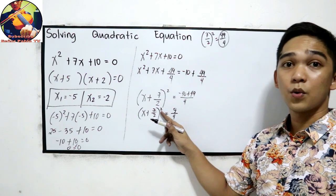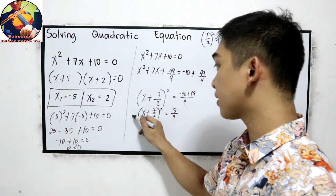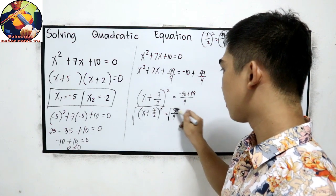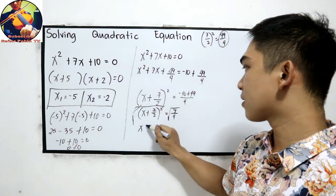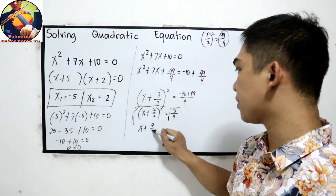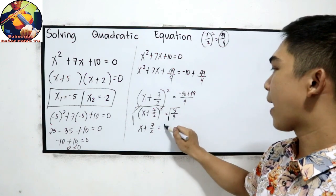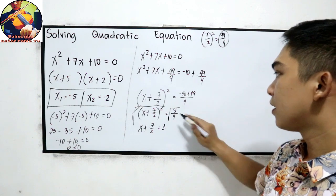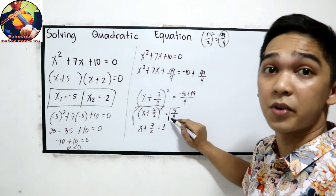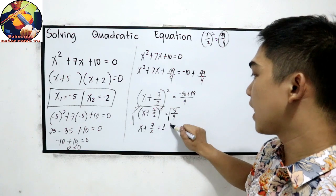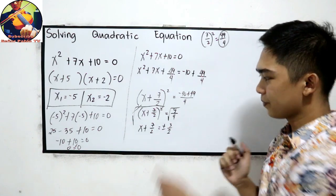Now we need to eliminate the square, so we extract the square root. x plus 7 over 2 equals plus or minus the square root of 9 over 4. Since 9 and 4 are perfect square numbers, the square root of 9 is 3 and the square root of 4 is 2, giving plus or minus 3 over 2.